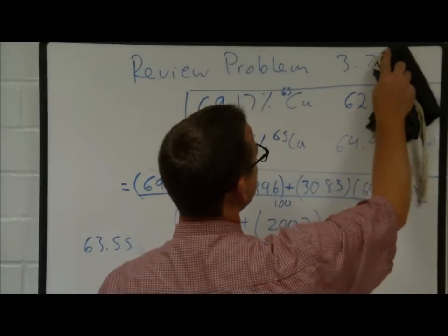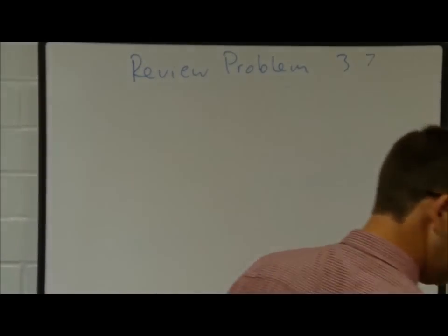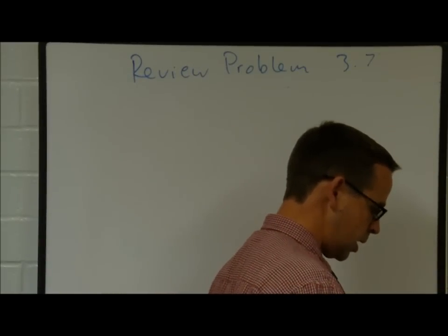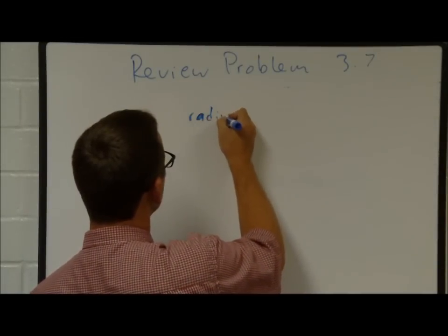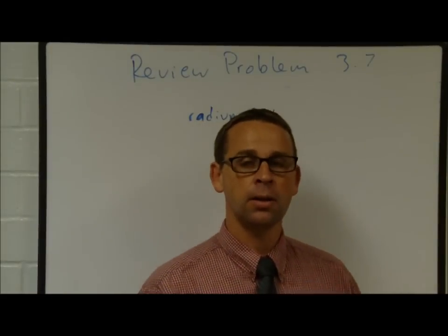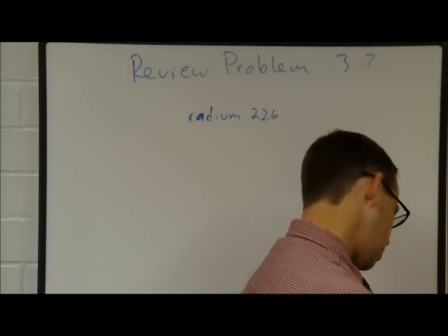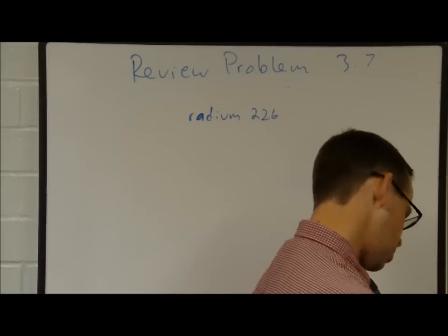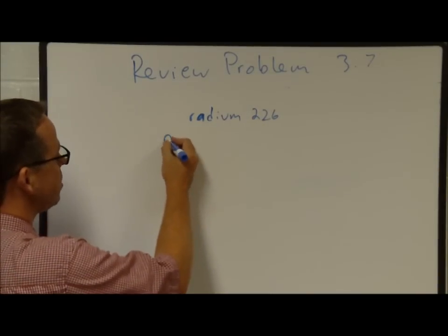Review problem 377. Give the number of neutrons, protons, and electrons for the following isotopes. Part A: radium-226. When we call an atom by a number like radium-226, we look for radium on the periodic table and see it is element number 88. Element number 88 indicates the number of protons, so there are 88 protons.